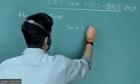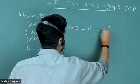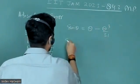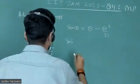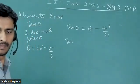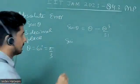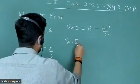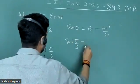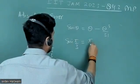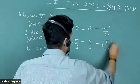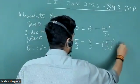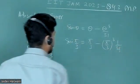Sine theta is equal to theta minus theta cube by 3 factorial. So sine pi by 3 will be equal to pi by 3 minus pi by 3 cubed times 1 upon 3 factorial.